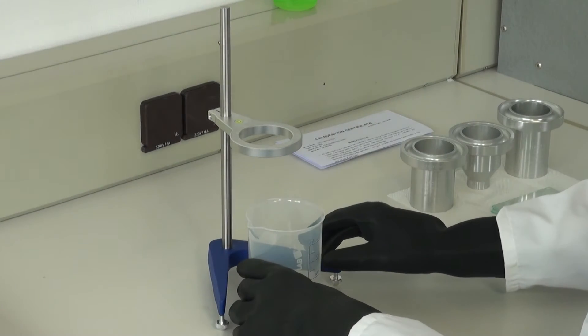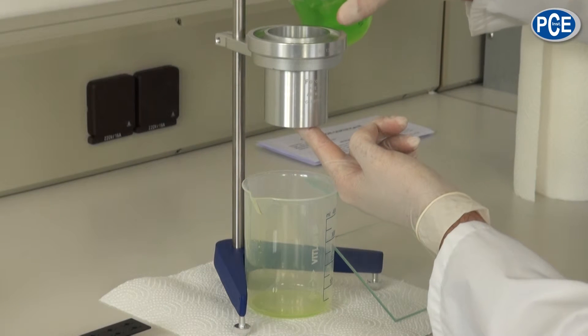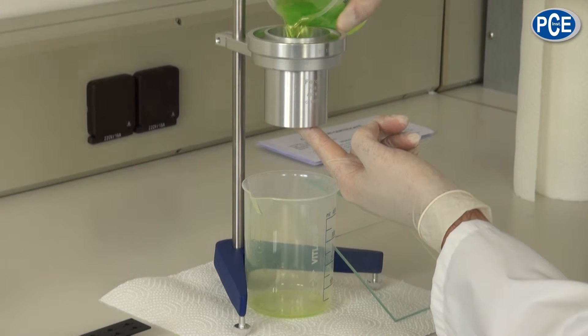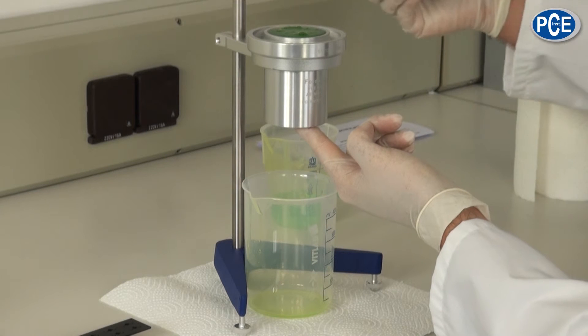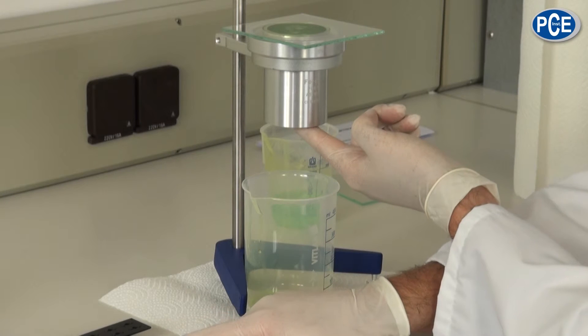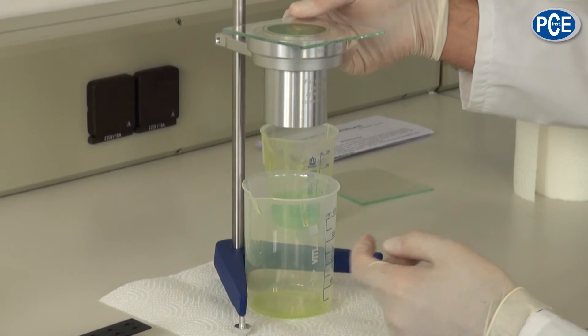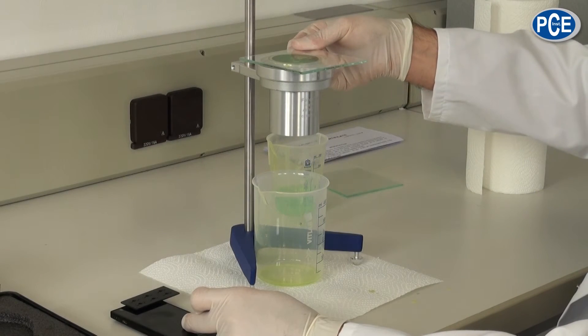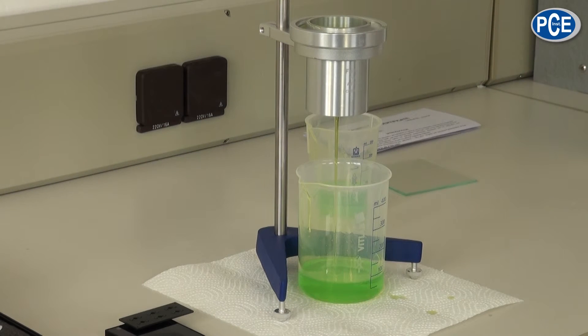To do a measurement, proceed as follows. We put the Flow Cup into the stand, put our finger onto the outlet nozzle, fill the probe into the cup, wipe off the overflowing probe, open the outlet nozzle by taking your finger away, take the glass plate off to start the measurement. Now the probe runs through and when the fluid stops flowing the time should be stopped.